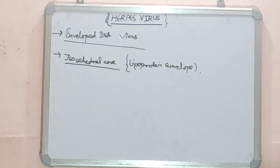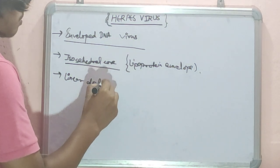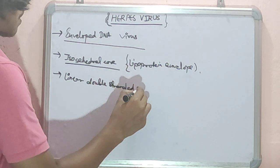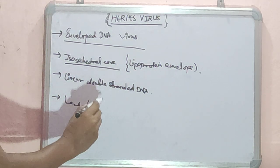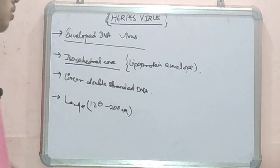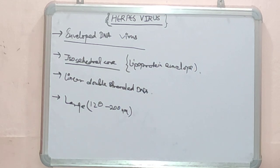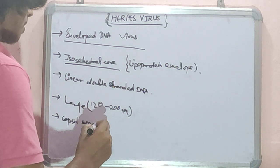It has a linear double-stranded DNA. It is large in shape and size, around 120 to 200 nanometers in diameter, second in size only to poxviruses. It has a capsid which surrounds the DNA core, and over the capsid is a tegument which is a protein-filled region.